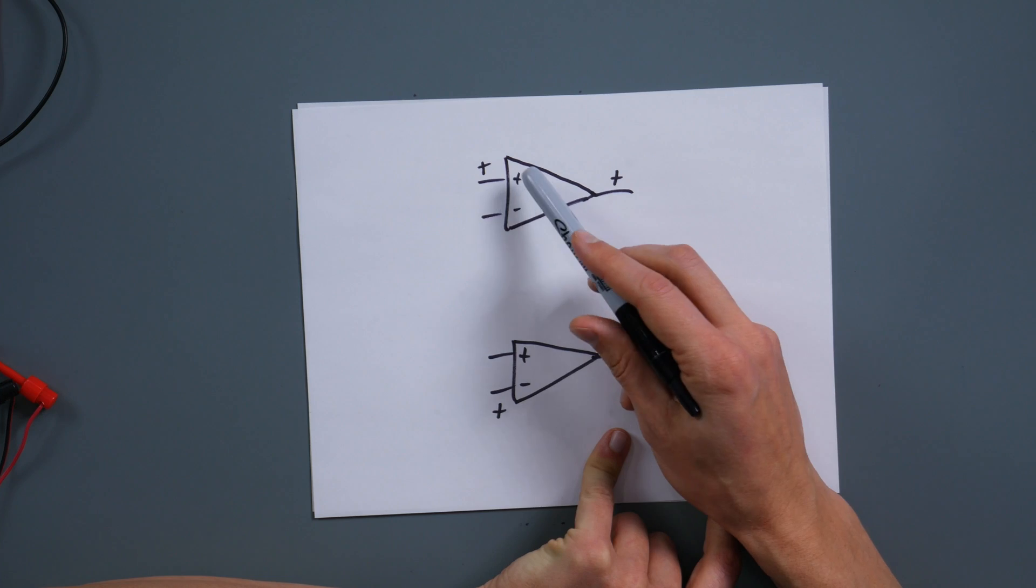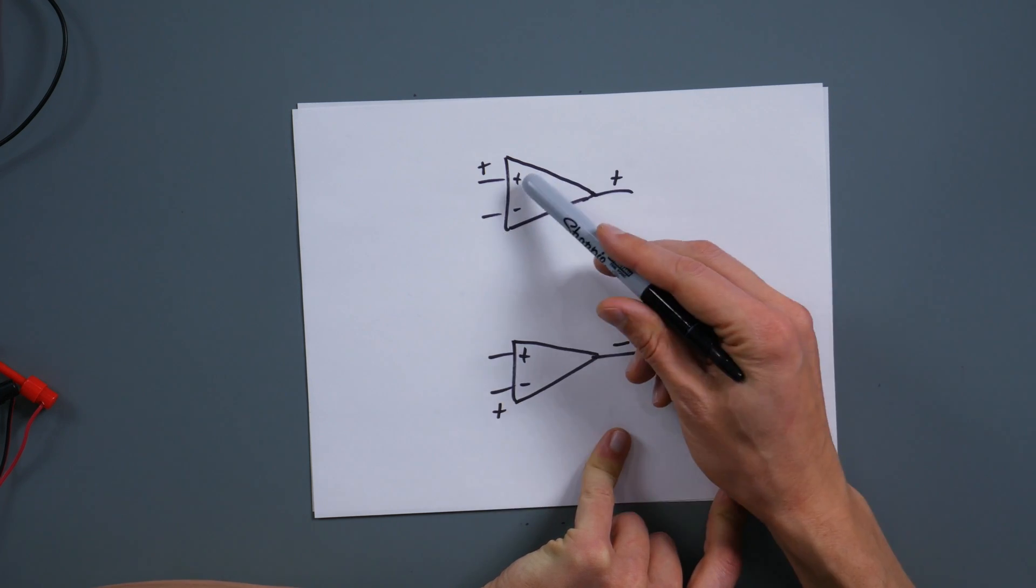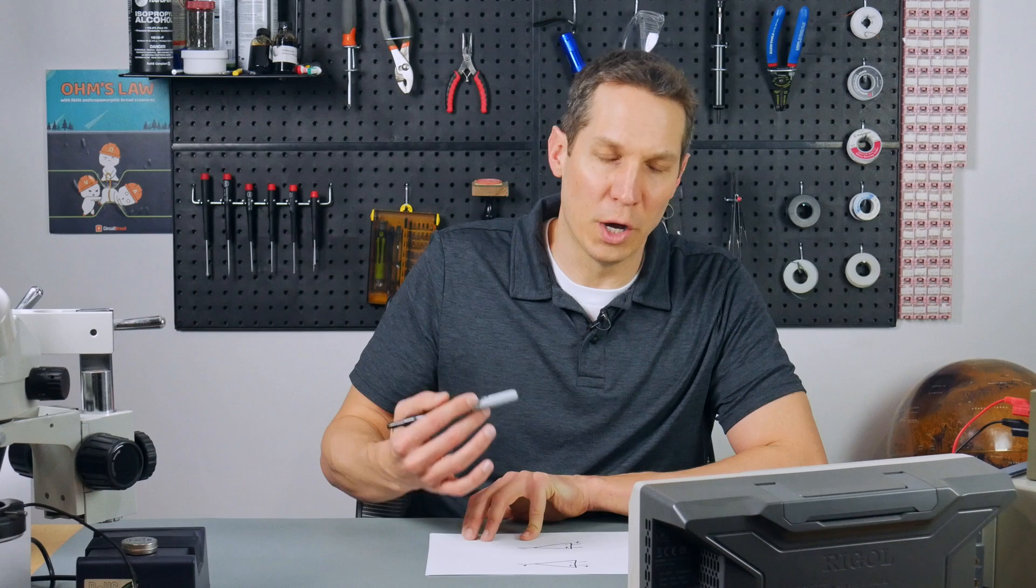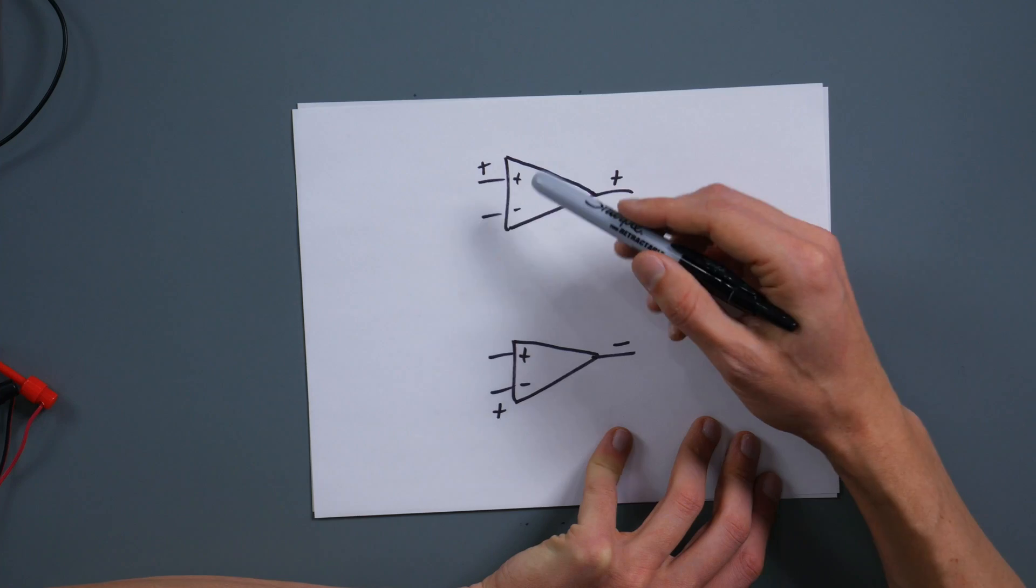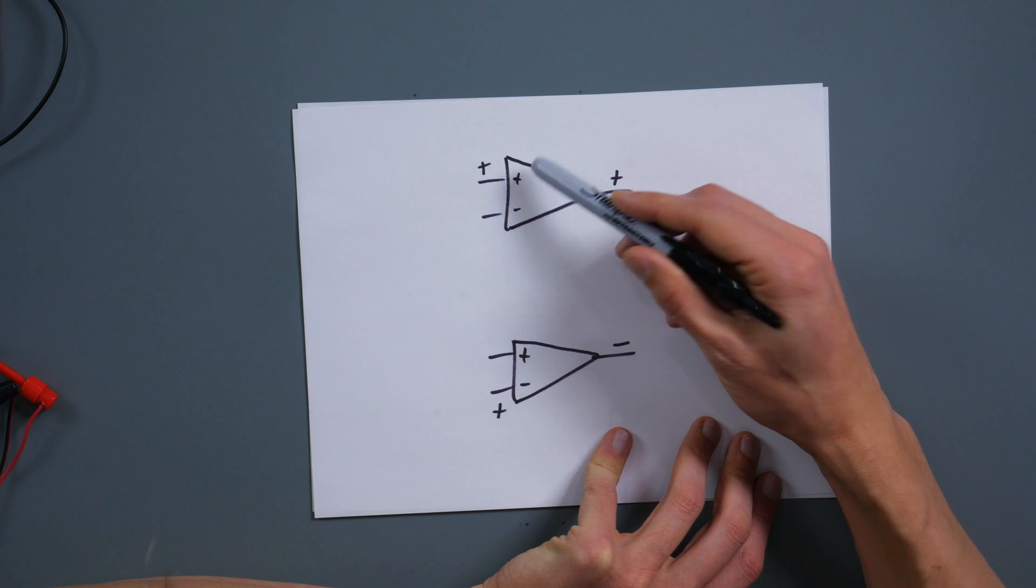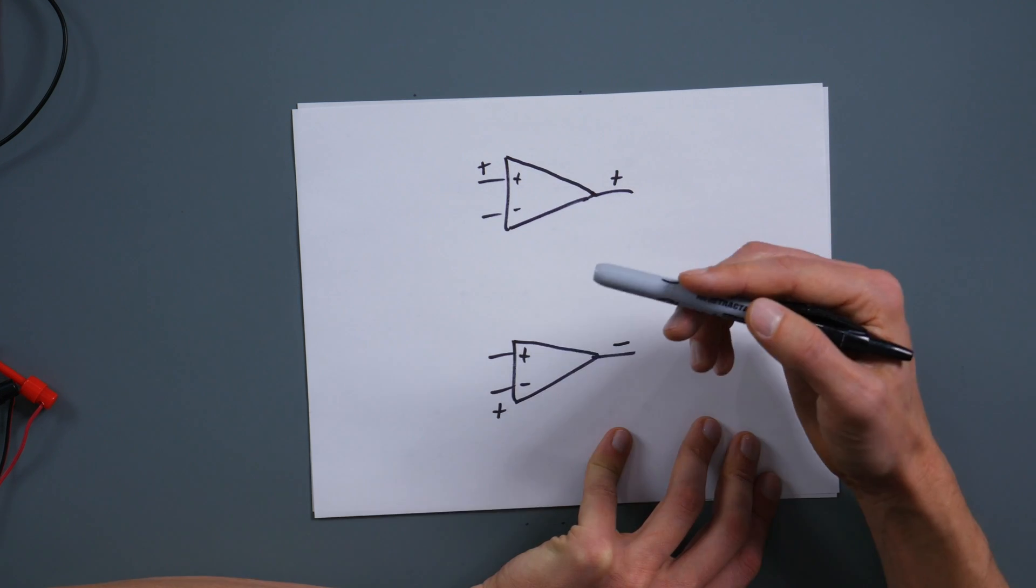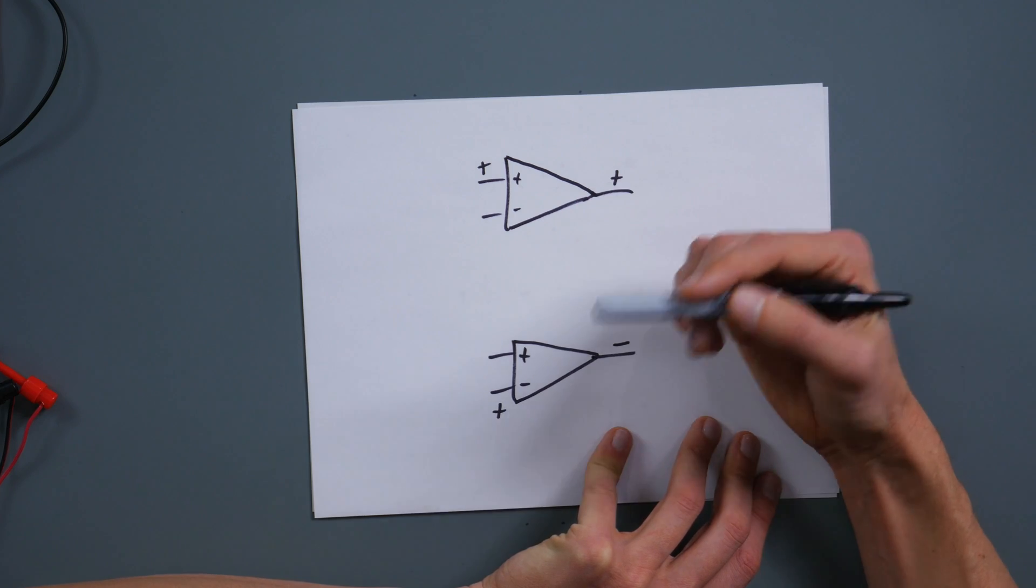So up until this point, whenever I've talked about the inputs to the op amp, I've just called them the plus, the minus, the positive input, the negative input, stuff like that. Another way to describe them that's probably much more helpful and understanding intuitively what's going on is you have your non-inverting input and your inverting input, which your positive is your non-inverting and your negative is your inverting.